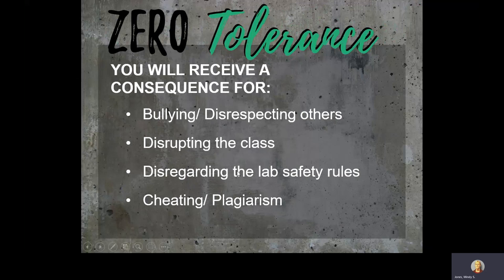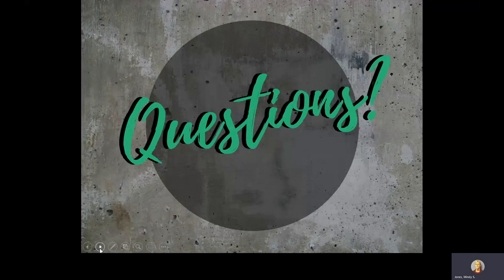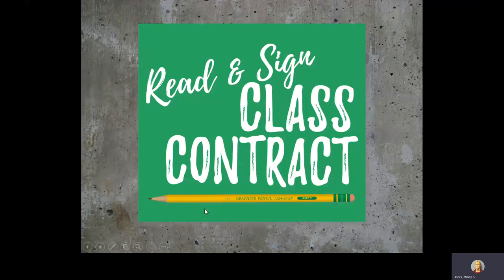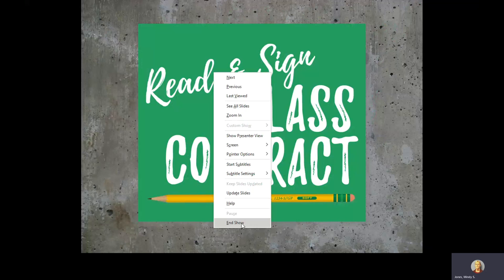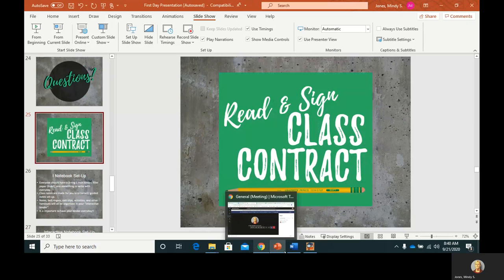There will be consequences for bullying, disrespecting others, disrupting class, and especially for disregarding lab safety rules. For cheating and plagiarism — if students copy and paste answers from the Internet or from another student — they will receive zeros and cannot make those assignments up. A second offense results in a parent or guardian contact and a referral for plagiarism. The best way to reach me is through my email: JonesM6 at DuvalSchools dot org, which is on your syllabus and on Focus. The first assignment was for students to read, sign, and have you sign it as well.